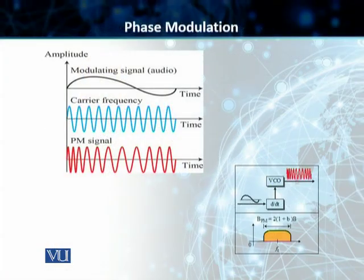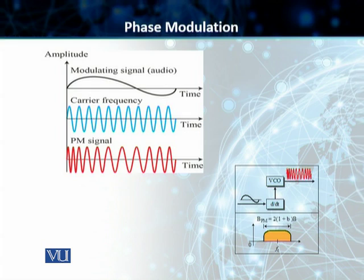Students, phase modulation, or PM, is the third of our analog-to-analog conversion techniques. In this case, the phase of the carrier signal is modulated to follow the changing voltage level or the amplitude of the modulating signal. Amplitude and frequency remain constant, whereas the phase changes in this particular case.